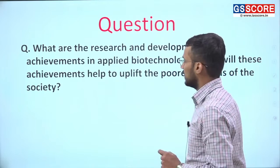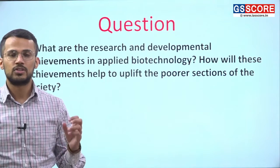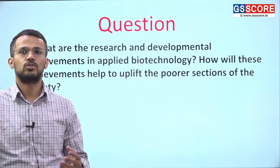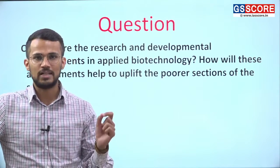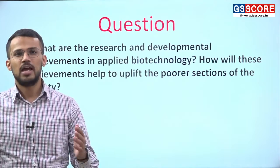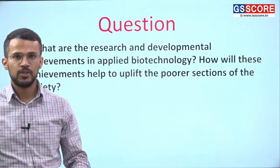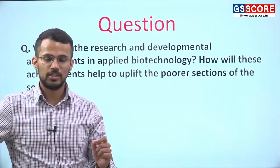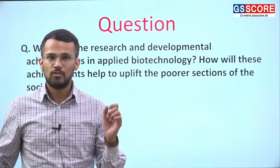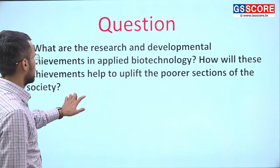In this particular question there are clearly two parts. Firstly, we are supposed to discuss what are the research and developmental achievements in the field of applied biotechnology. Applied biotechnology is that type of biotechnology which has its applications in various sectors — in industries, agriculture, and so on. In the second part, we address how these achievements have helped poorer sections of the society.